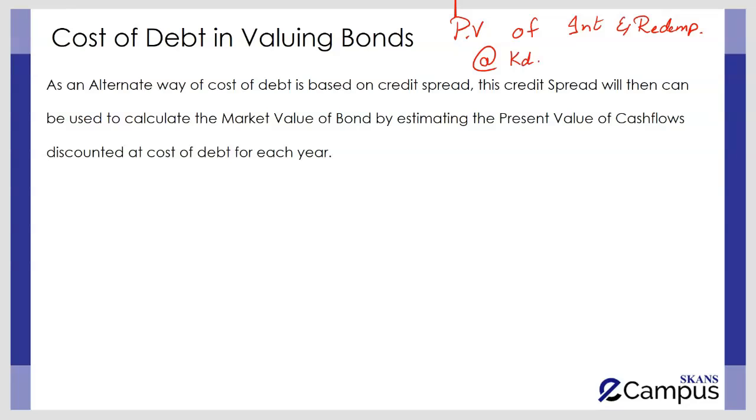However, in earlier videos we discussed that there is an alternate way of estimating the cost of debt which is based on the credit spread, and this credit spread will then be used to calculate the market value of a bond by estimating the present value of cash flows discounted at cost of debt for each year. Remember, as the credit spread will be different for each year, and maybe the risk-free rate of return as well, the overall cost of debt for each year might be different.